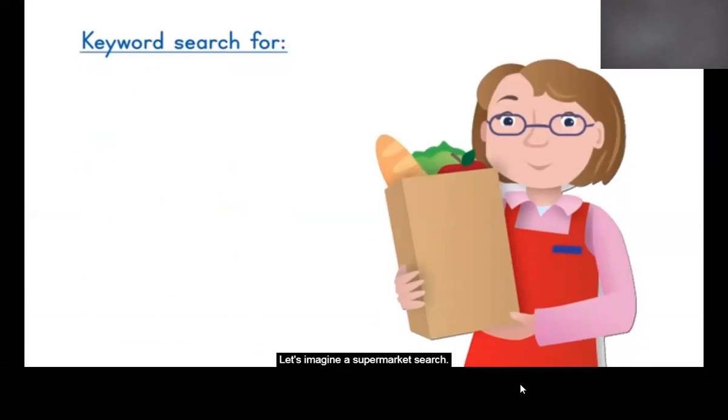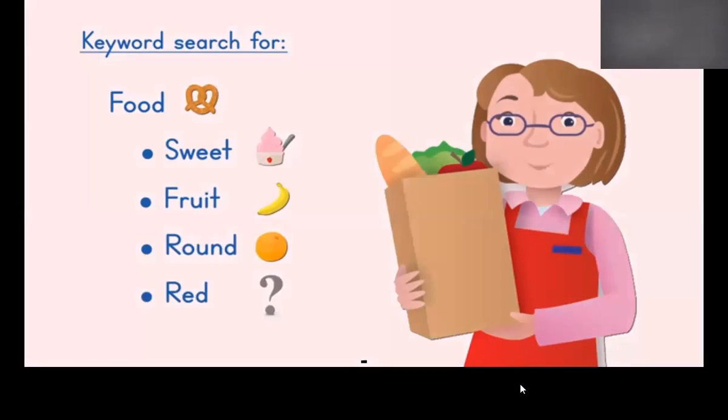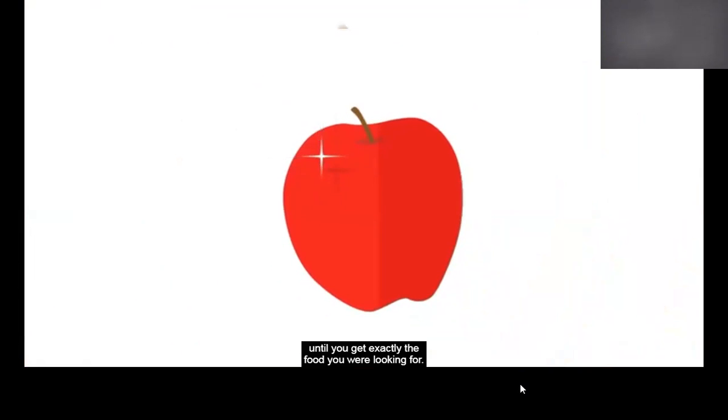You're hungry, so you ask your local grocer for some food, and that might get you a pretzel, which is great but not what you are looking for. So as you're talking to the grocer, you add keywords like sweet and fruit and round and red until you get exactly the food you are looking for.